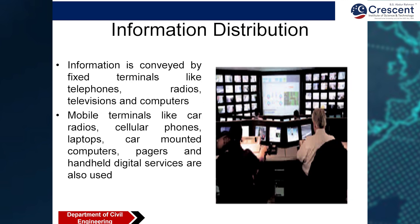The Information Distribution System is a control and command center where all information is monitored and messages are sent back. If a particular area has heavy traffic, the information is distributed to nearby local or collector streets so that people can divert to different directions. Information is conveyed by fixed terminals like telephones, radio, television, and computers, as well as mobile terminals like car radio, cellular phones, laptops, car-mounted computers, pagers, and household digital services.